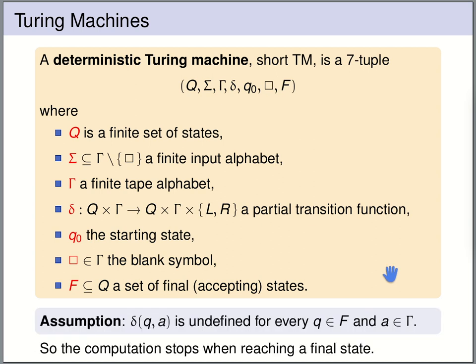We make one assumption for Turing machines: whenever we reach a final state, we stop the computation. So we say that delta(q, a) should be undefined whenever q is a final state and for any tape alphabet symbol a. The Turing machine accepts all words where the computation reaches a final state at any point, so it makes no sense to continue after having reached a final state.